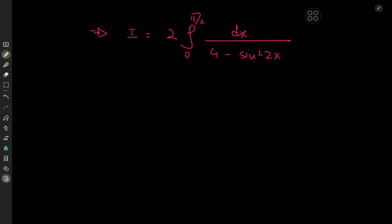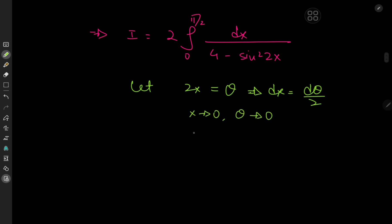This implies that the integral I equals twice the integral from 0 to pi by 2 of dx divided by 4 minus sine square 2x. We introduce a substitution whereby we let 2x equal theta, which implies on differentiation that dx equals d theta by 2. As x approaches 0, we have theta approaching 0, and as x approaches pi by 2, we have theta approaching pi. The integral is now twice the integral from 0 to pi of d theta divided by 2, with 4 minus sine square theta left in the denominator.